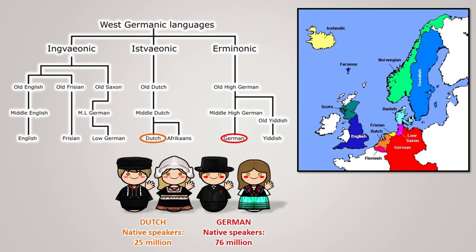German is an official language in Germany, Austria, Switzerland, Belgium, Luxembourg, and Liechtenstein. Dutch is an official language in the Netherlands, Belgium, Suriname, Aruba, Curaçao, and St. Martin.